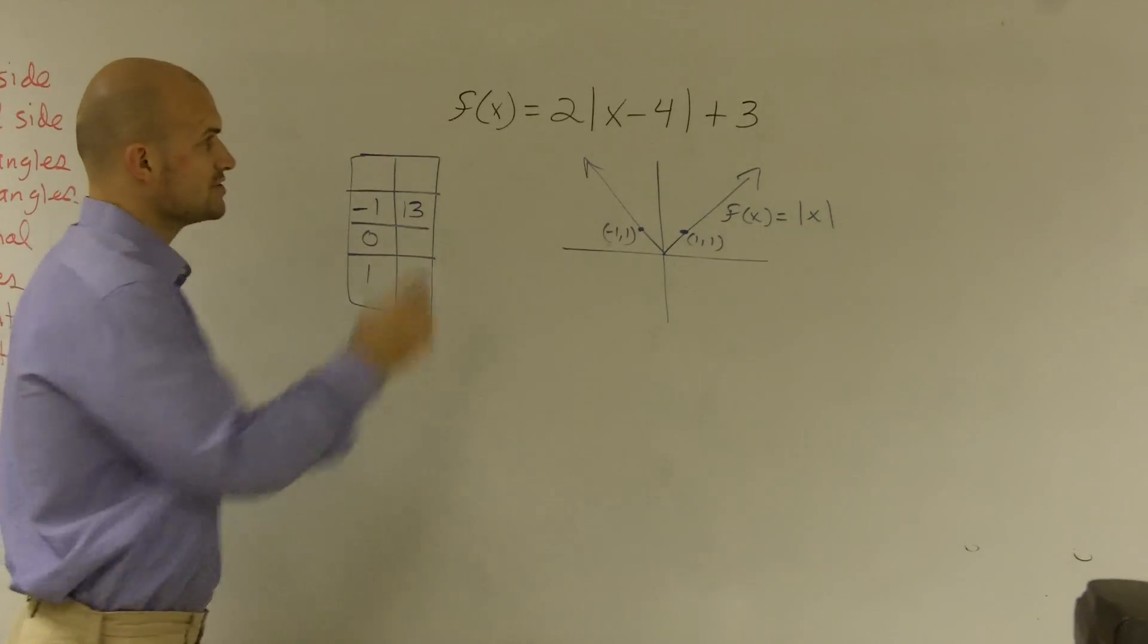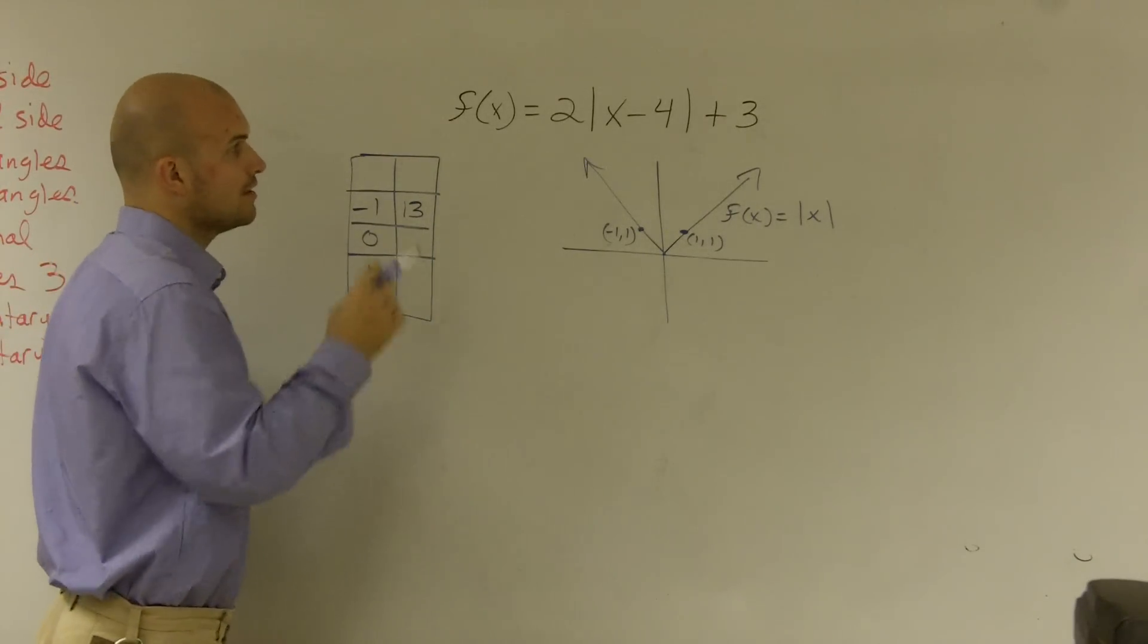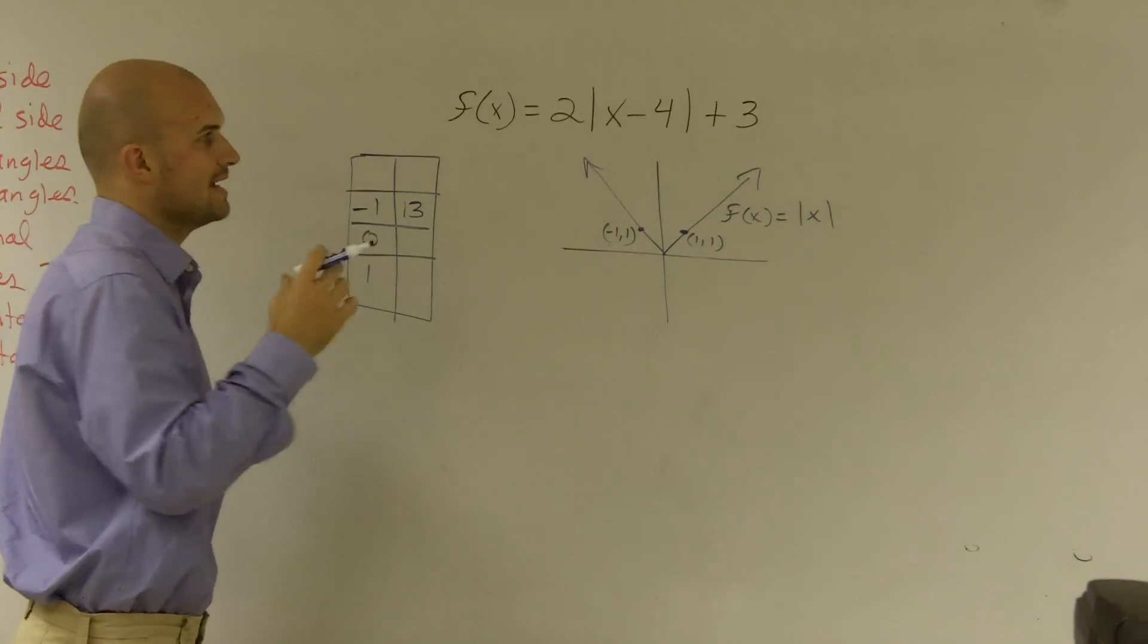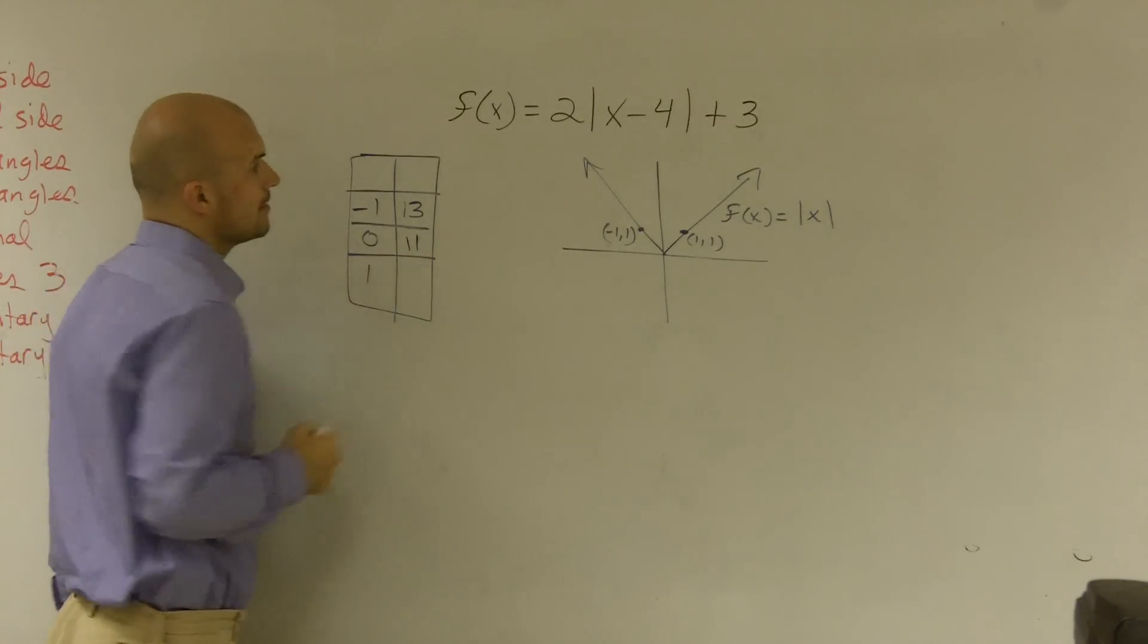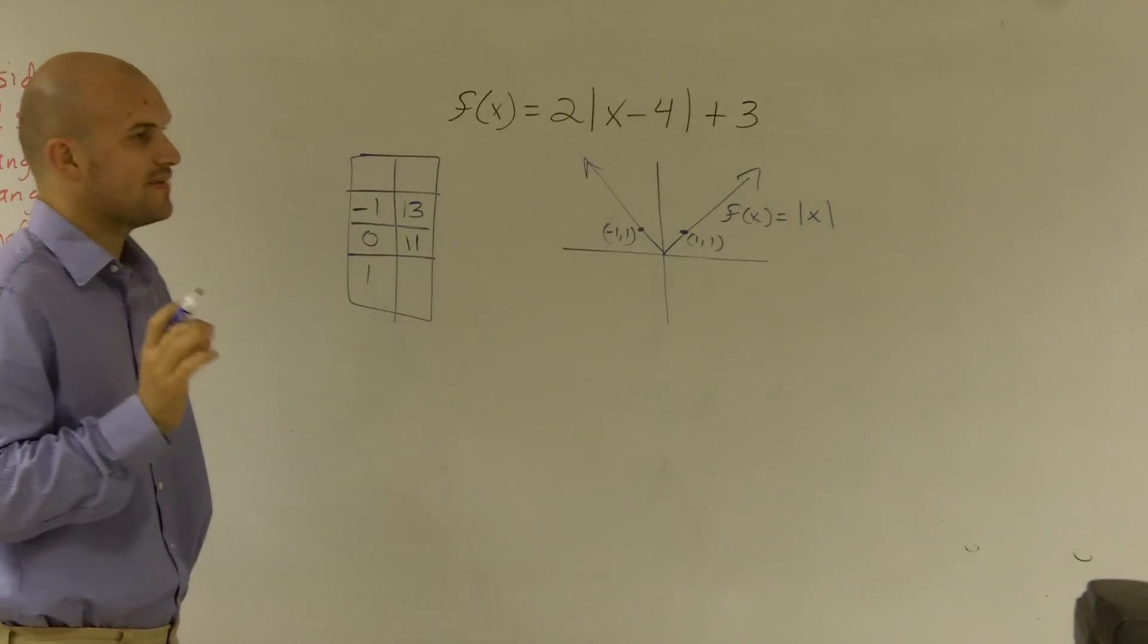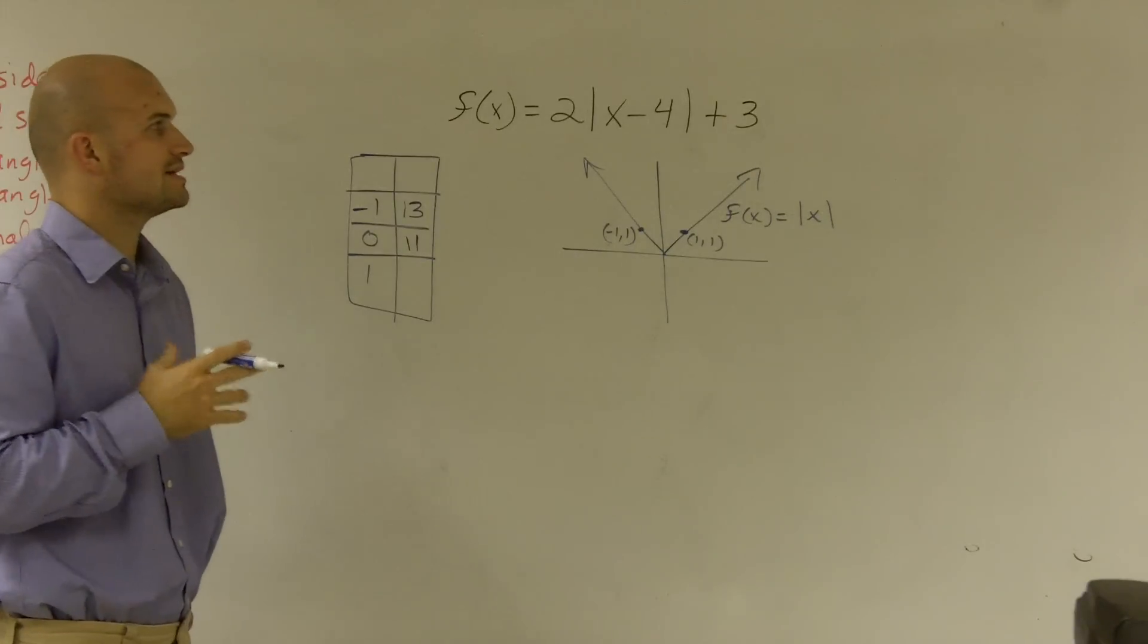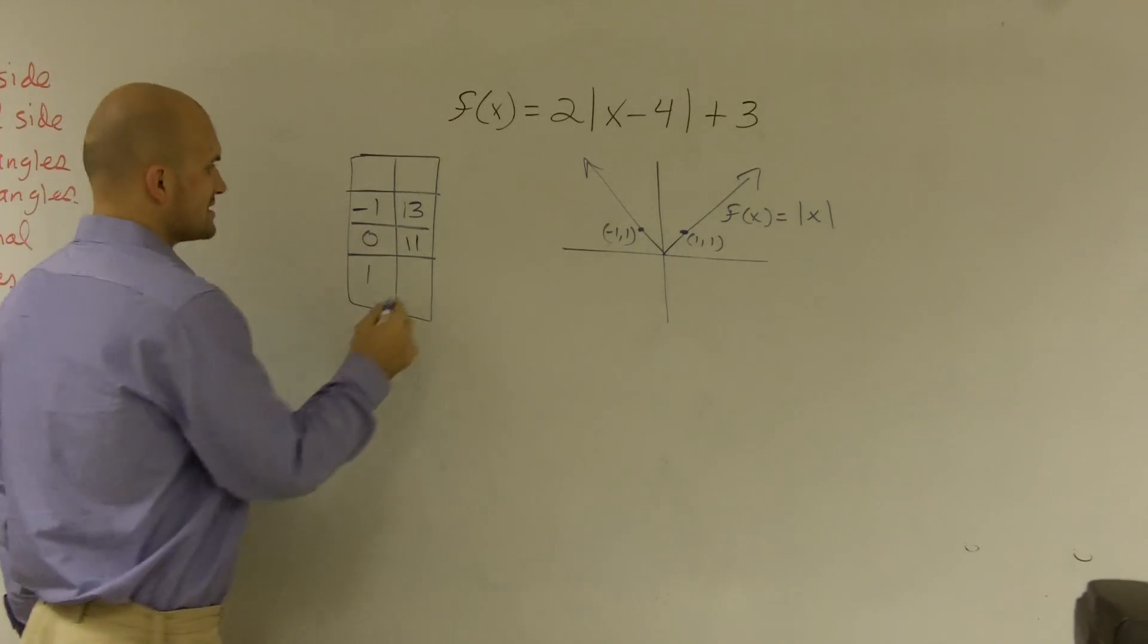0. 0 minus 4 is a negative 4. Absolute value of negative 4 is 4. 4 times 2 is 8. 8 plus 3 is 11. 1. 1 minus 4 is negative 3. Absolute value of negative 3 is 3. 3 times 2 is 6. 6 plus 3 is 9.